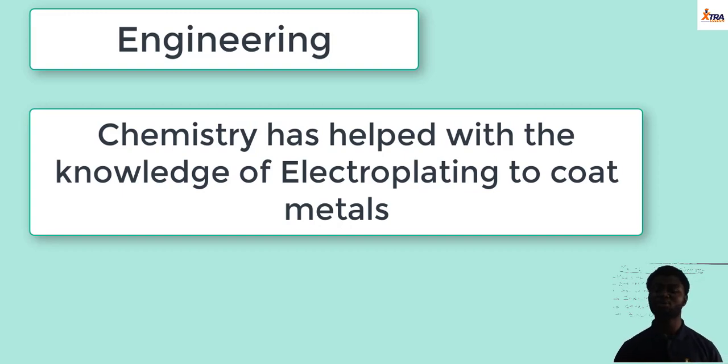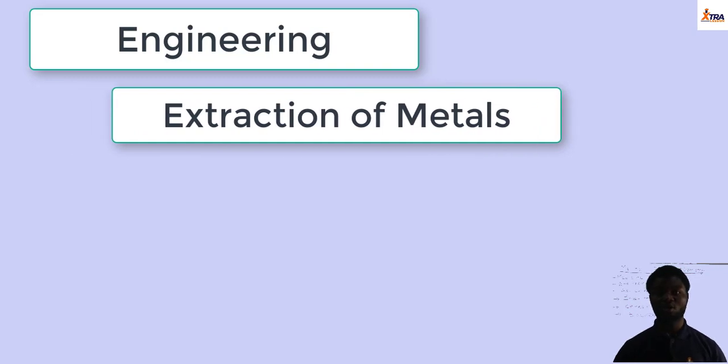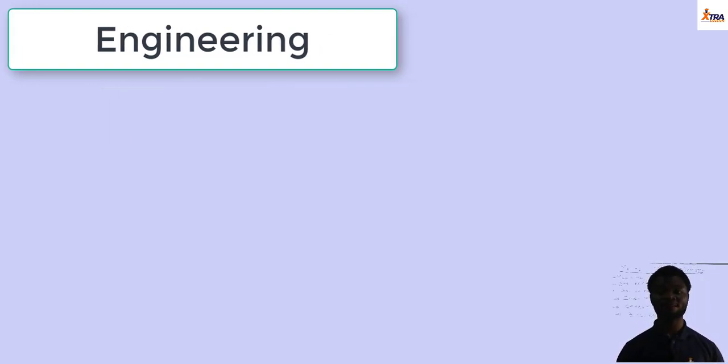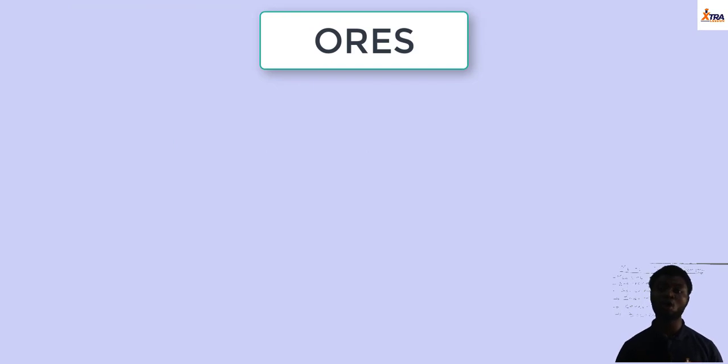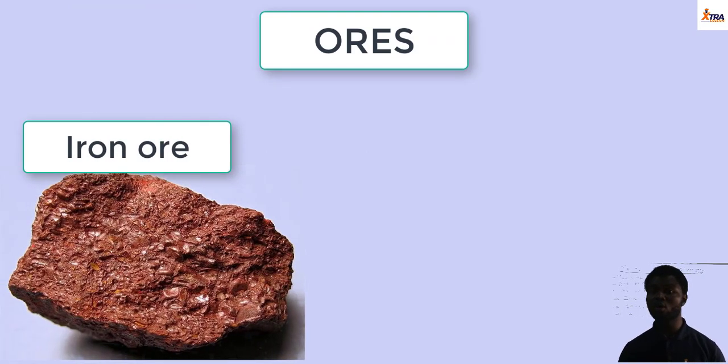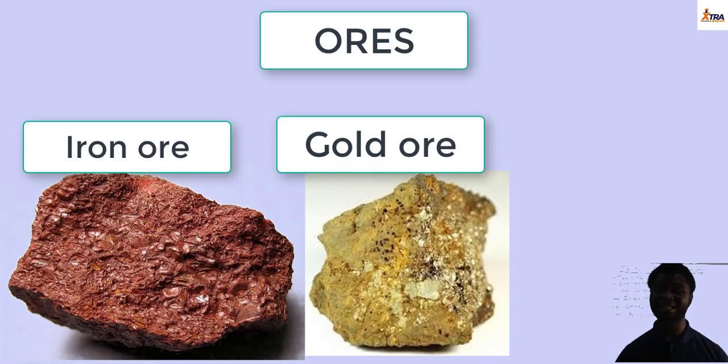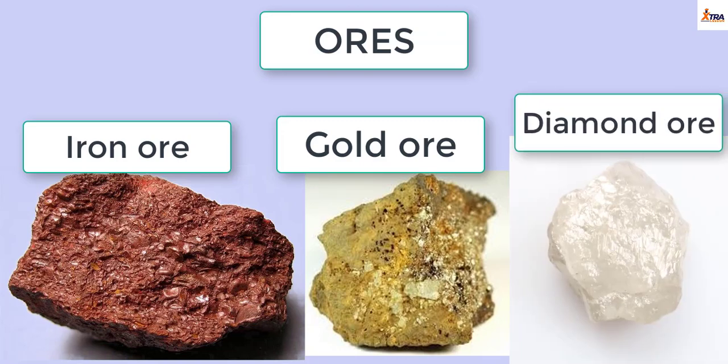Another way chemistry helped us in engineering is extraction of metals. If not for the knowledge of chemistry, we wouldn't be able to extract metals from the earth crust. Most metals are highly reactive and they exist in ores, in naturally occurring forms which are called ores. These metallic ores are practically needless and useless except for the fact that we are able to mine them, extract the metals needed and process them into finished products. And that can only be done with the knowledge of chemistry.